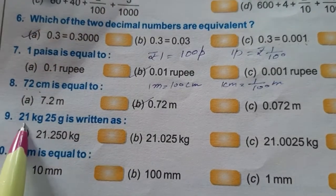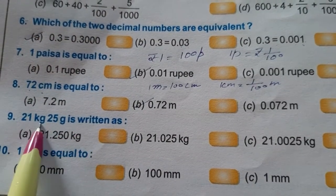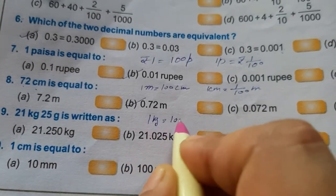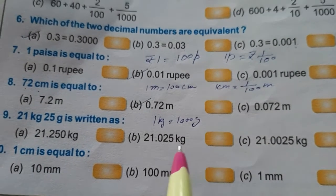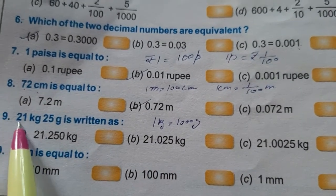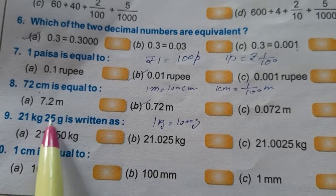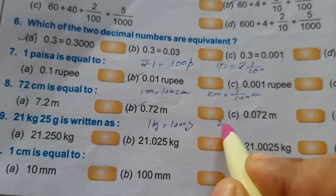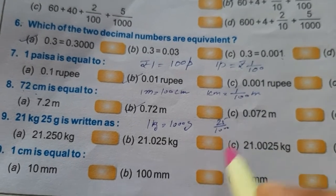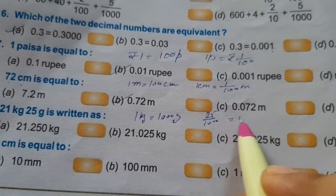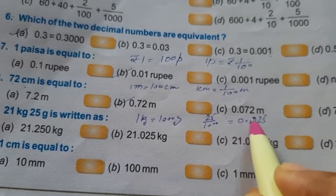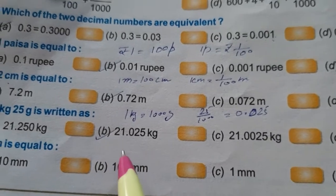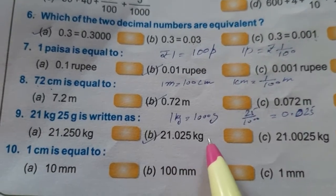Next is 21 kg and 25 grams. We know in 1 kg there are 1000 grams. So 25 grams can be written in kg as 25 by 1000. So it will come out to be 0.025. So the answer will be B option, 21.025 kg.